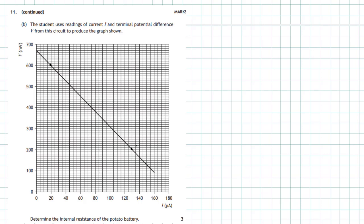We have to determine the internal resistance of the potato battery from that graph. Look at the graph, check out the scales. Along the x-axis we have current which is measured in microamps. On the y-axis we have voltage which is measured in millivolts, so be careful about that. Millivolts is 1 × 10^-3 of a volt, microamps is 1 × 10^-6 of an amp.